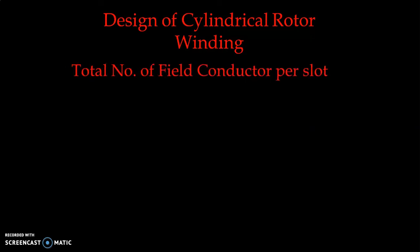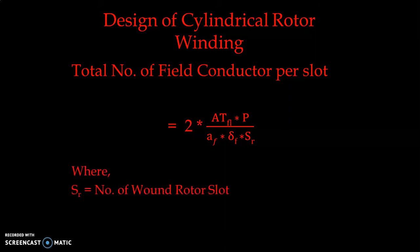Finally, the total number of field conductors per slot is: (2 × ATfl × P) / (Af × δf × Sr), where Sr is the number of wound rotor slots. This completes the calculation of all parameters of the rotor or field winding for the cylindrical type of rotor. In the next lectures we will further design the turbo alternator. Thank you for watching — keep watching, thank you very much.